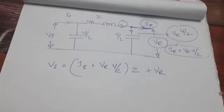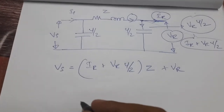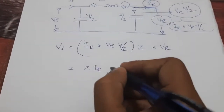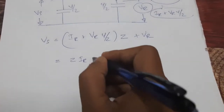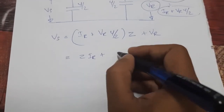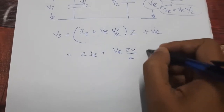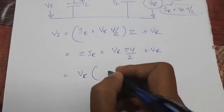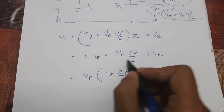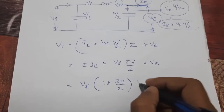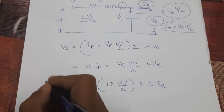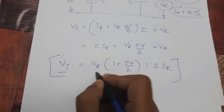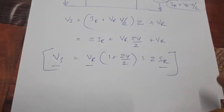Expanding this: Vs = Vr + Z·Ir + Z·Vr·(Y/2). Taking Vr as common gives Vs = Vr·(1 + ZY/2) + Z·Ir. So we have represented the sending end voltage in terms of the receiving end voltage and receiving end current. From this, we already have our A and B parameters: A = 1 + ZY/2 and B = Z.